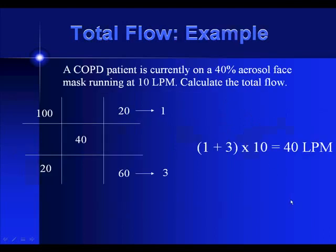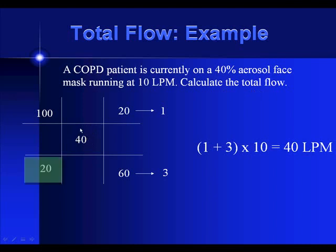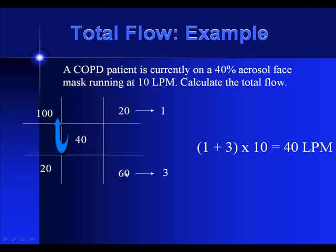Let's look at an actual example. We have a 40% aerosol face mask running at 10 liters per minute, and we need to calculate the total flow. We put 40% in the center box. Since it's 40%, the value is 20. We subtract 20 from 40, giving us 20 in the top right box, and subtract 40 from 100, giving us 60. So 20 to 60 is a 1 to 3 ratio. Add 1 and 3 to get 4, multiply by the flow rate of 10, which gives you 40 liters per minute total flow.